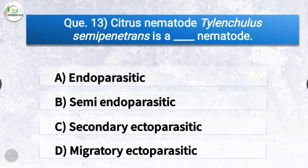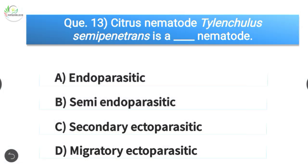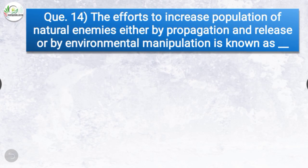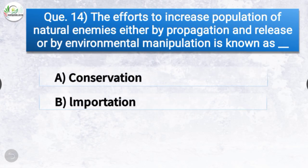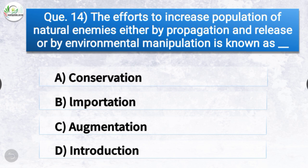Question number thirteen: Citrus nematode Tylenchulus semipenetrans is a dash nematode. The options are endoparasitic, semi-endoparasitic, ectoparasitic, or migratory ectoparasitic. The correct answer is option B, semi-endoparasitic — citrus nematode Tylenchulus semipenetrans is a semi-endoparasitic nematode.